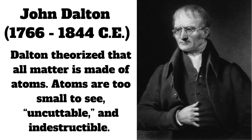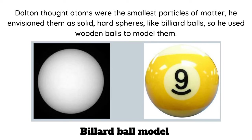In the early 1800s, the English chemist John Dalton performed a number of experiments that eventually led to the acceptance of the idea of atoms. He formulated the first atomic theory since the death of chemistry that occurred during the prior 2,000 years. John Dalton believed in Democritus' work. Because Dalton thought atoms were the smallest particles of matter, he envisioned them as solid, hard spheres, like billiard balls, so he used wooden balls to model them.